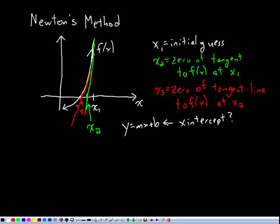Well, the x-intercept is where y is zero. So I set y equal to zero and solve for x. I subtract the b, divide by m, and I get that the x-intercept is negative b over m.